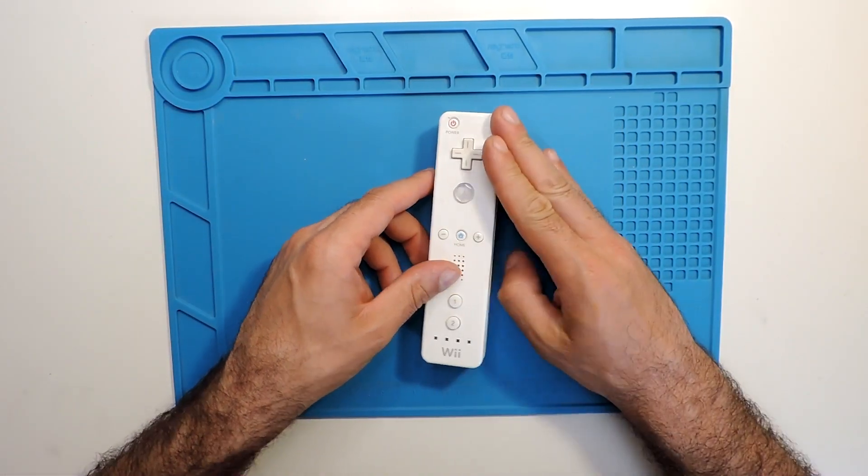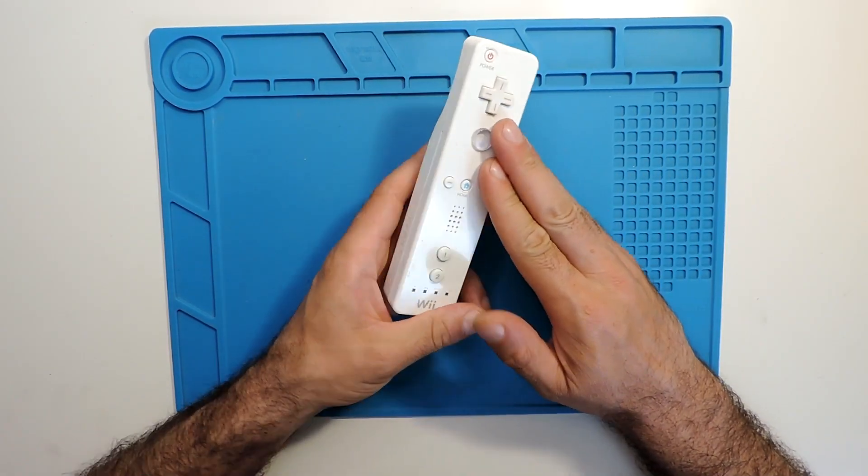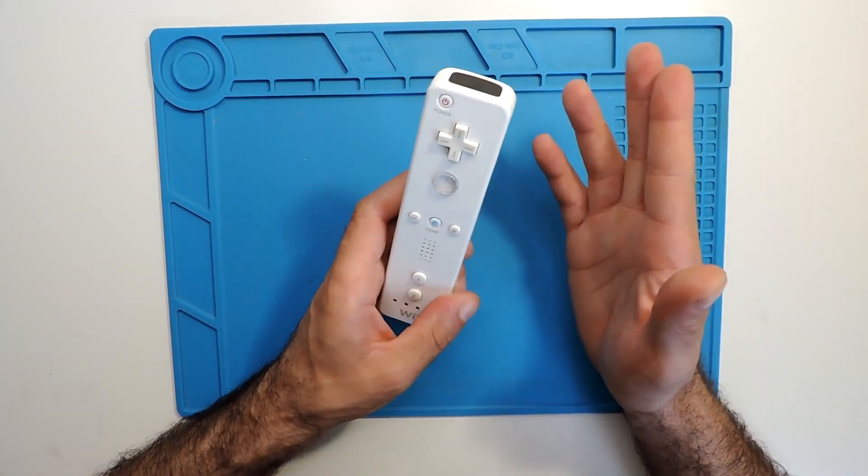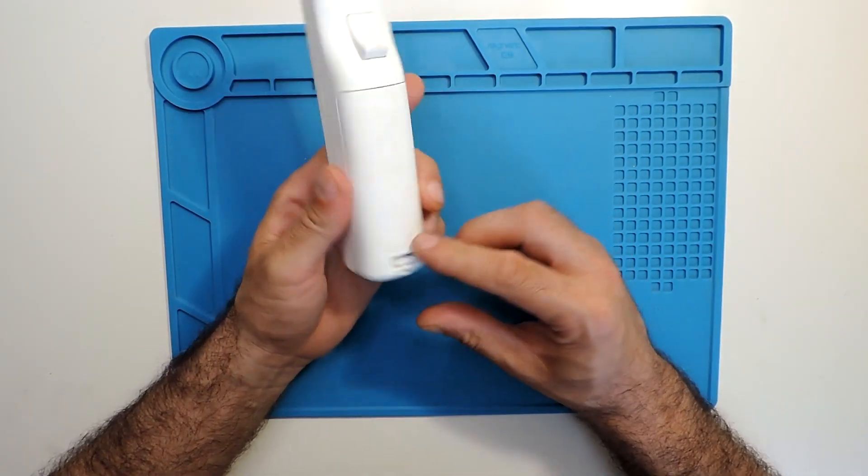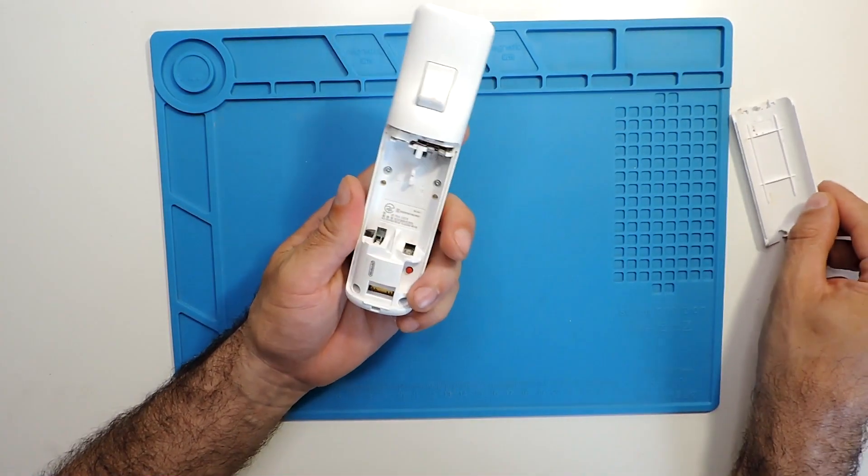Hi everyone, today we have a Nintendo Wii controller and I'll show how to disassemble this type of controller. First things first, you need to remove the back battery cover.